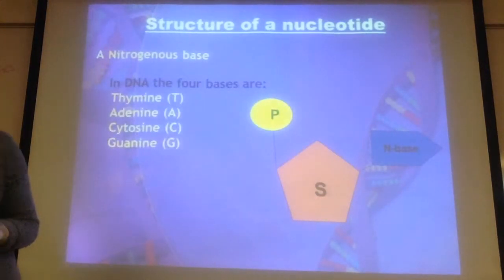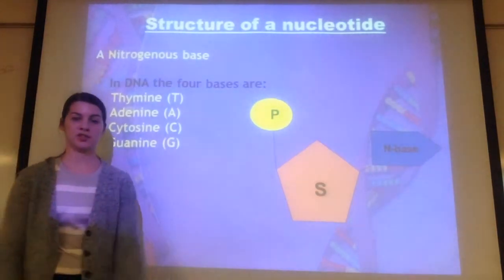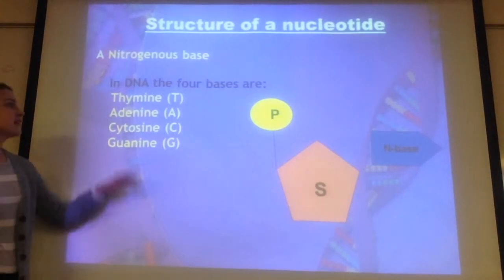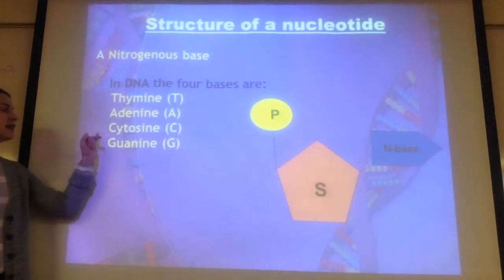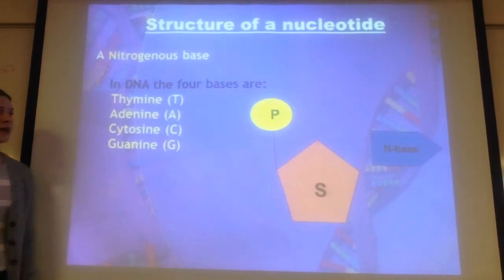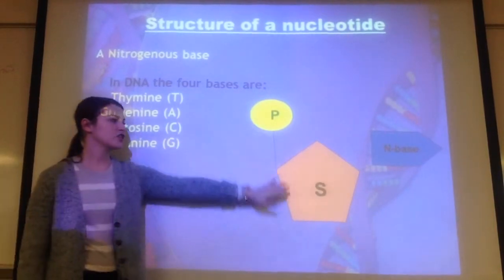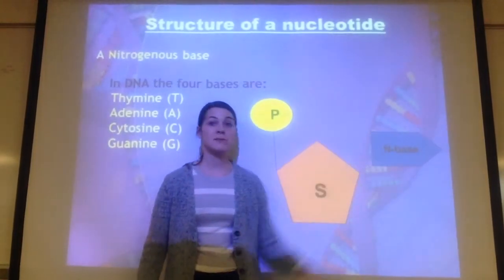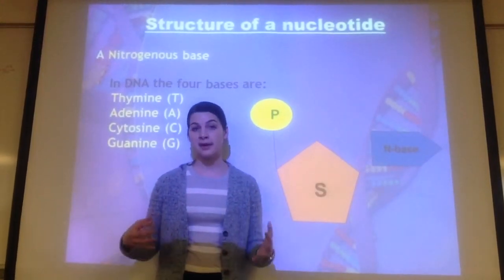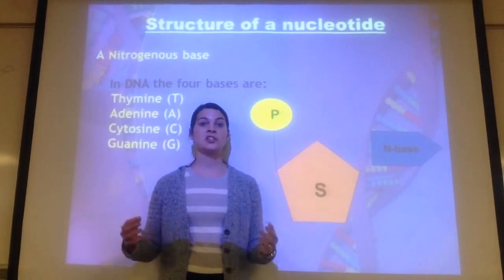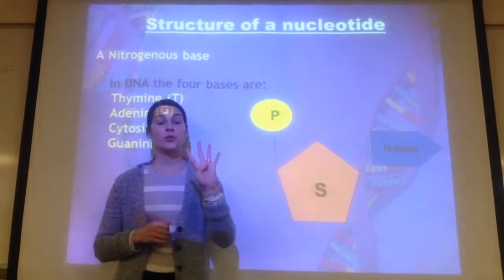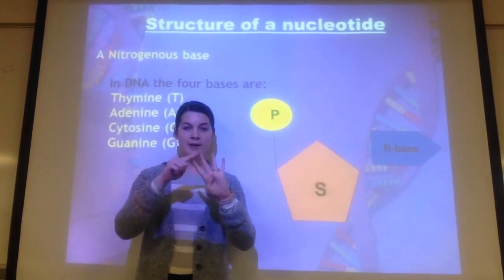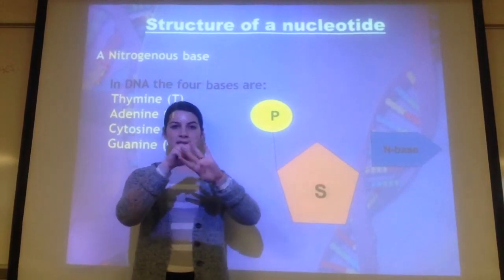The third piece is the base, which is on the inside of the DNA ladder. The four bases are thymine, adenine, cytosine, and guanine. So we have our phosphate, sugar, and now the base — called a nitrogen-containing base or N-base because it has nitrogen atoms in it. There are four different nitrogen-containing bases: adenine, thymine, guanine, and cytosine.